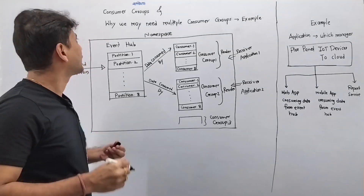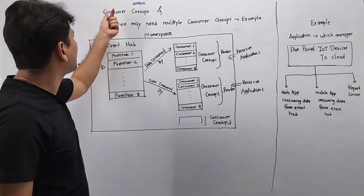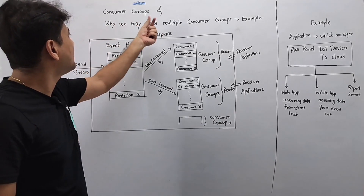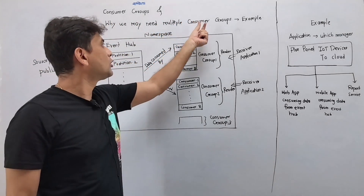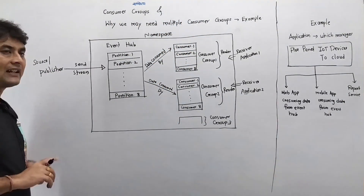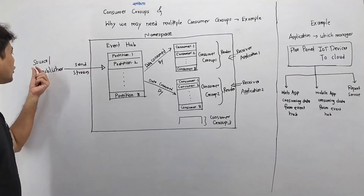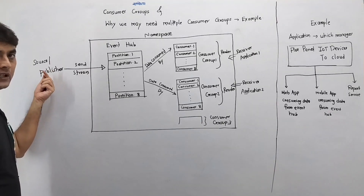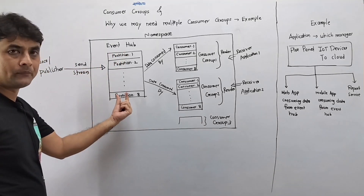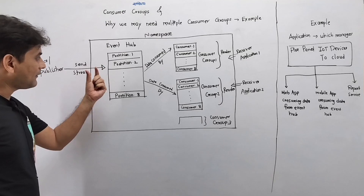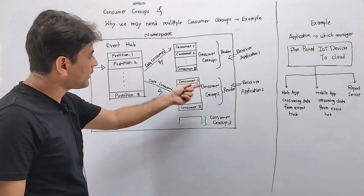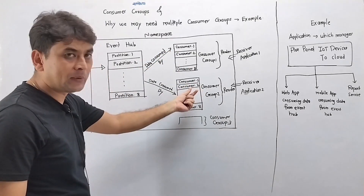Hello guys. In this video we will discuss about consumer groups and why we may need multiple consumer groups for the same event app. We have this source or publisher which is sending or streaming data to this event app, and data from this event app is consumed by one or multiple consumer groups.